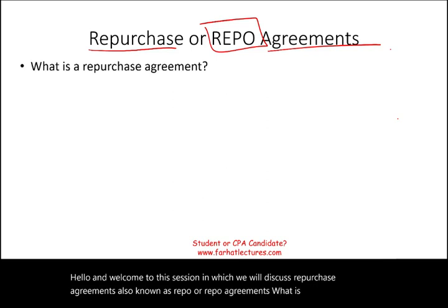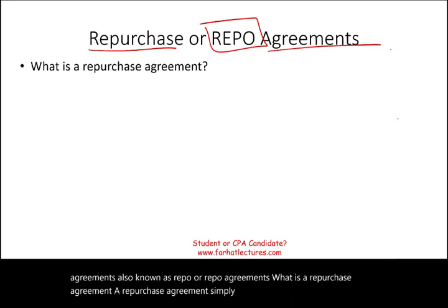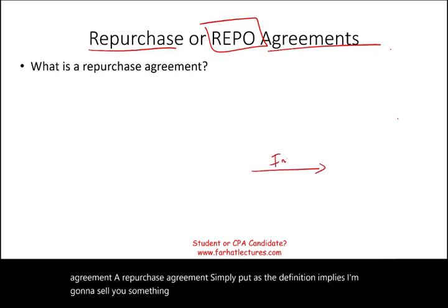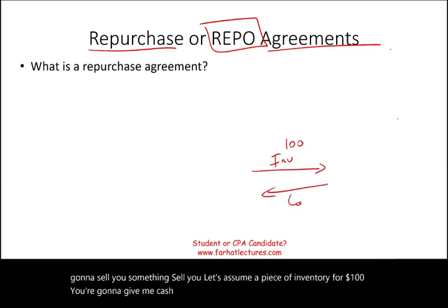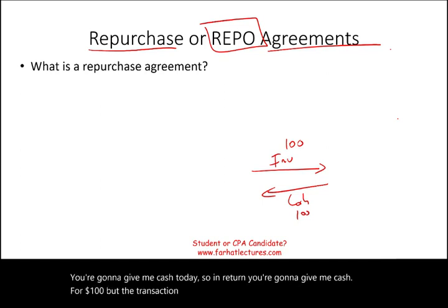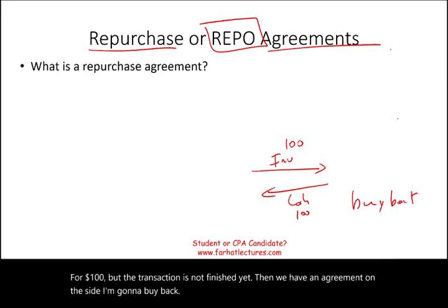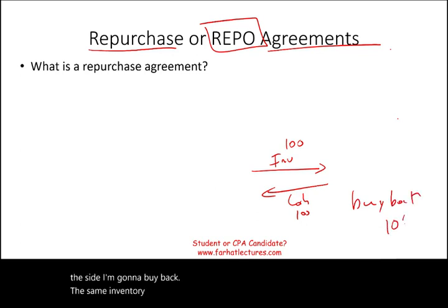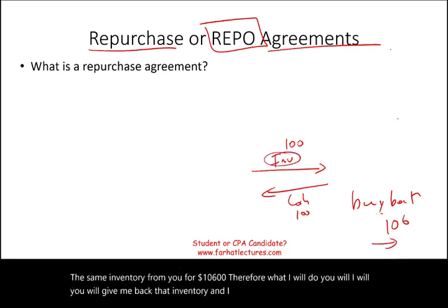What is a repurchase agreement? Simply put, as the definition implies: I'm going to sell you a piece of inventory for $100. You're going to give me cash for $100. But the transaction is not finished yet — we have an agreement on the side. I'm going to buy back the same inventory from you for $106. So you will give me back that inventory and I'll give you back $106.